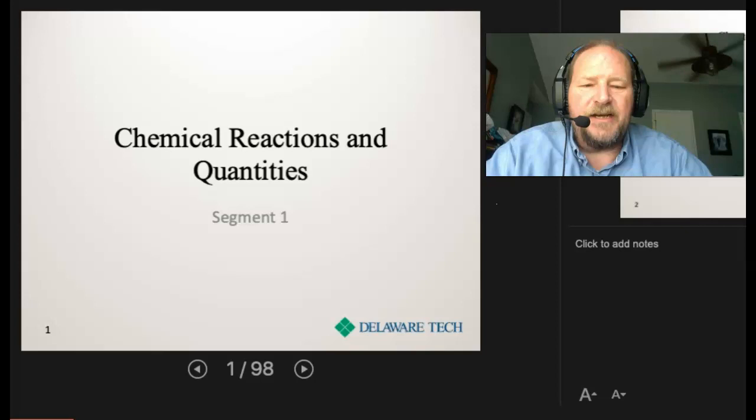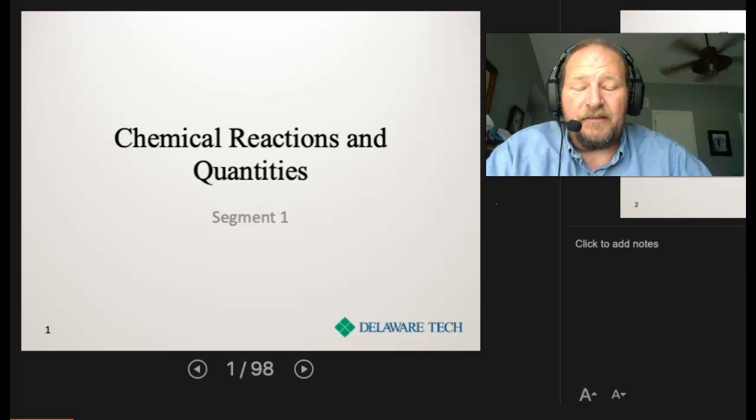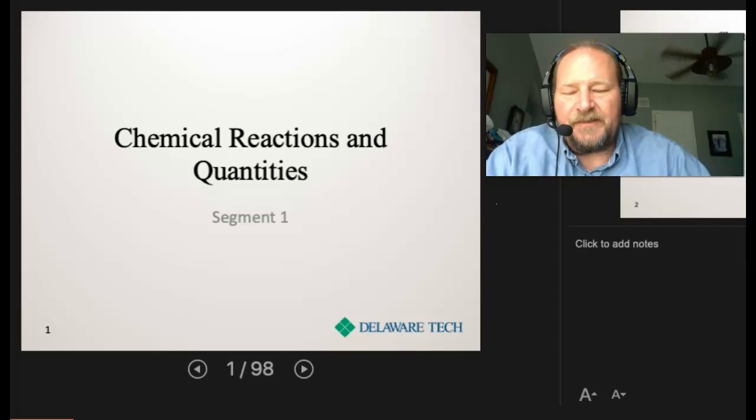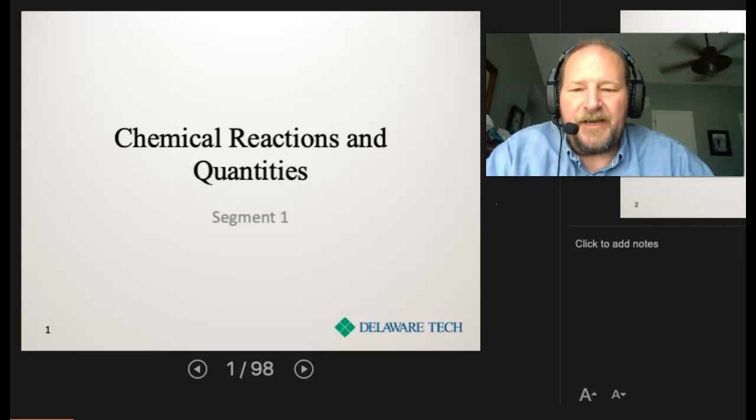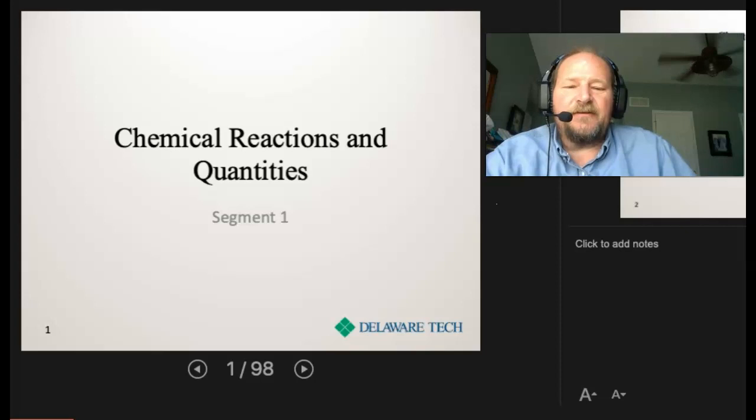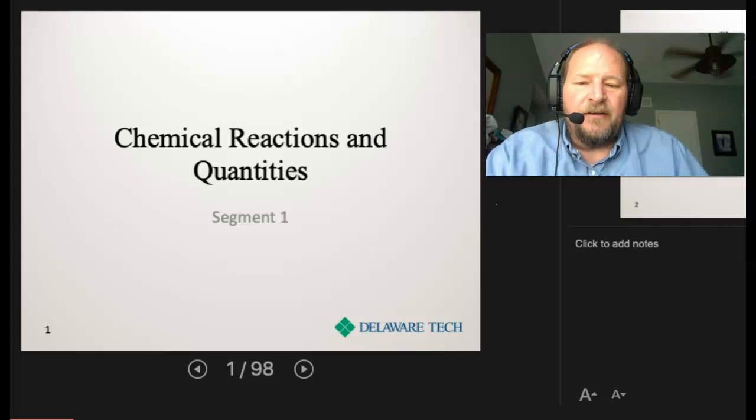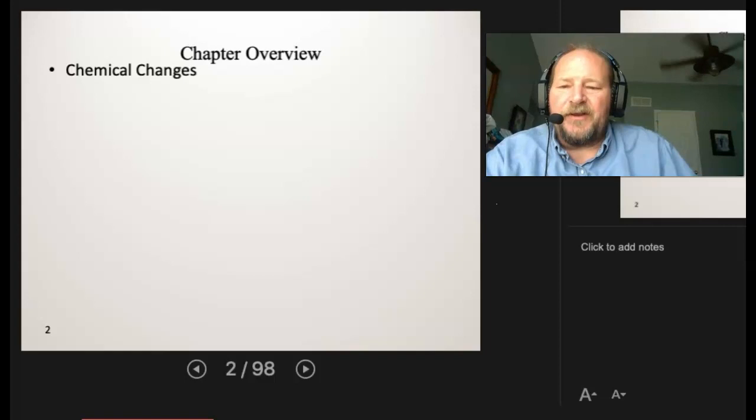All right, so we finished up chemical bonding and naming. If you want to reflect back, we started with matter. We learned how to separate matter into substances and mixtures. Then we focused in on substances and looked at elements. Then from elements, we've looked at compounds. And next, we're going to take those compounds and start to look at reactions. And then how do we keep track of those quantities? How do we measure out mass and some new stuff, mole? We'll be talking about that in this chapter.